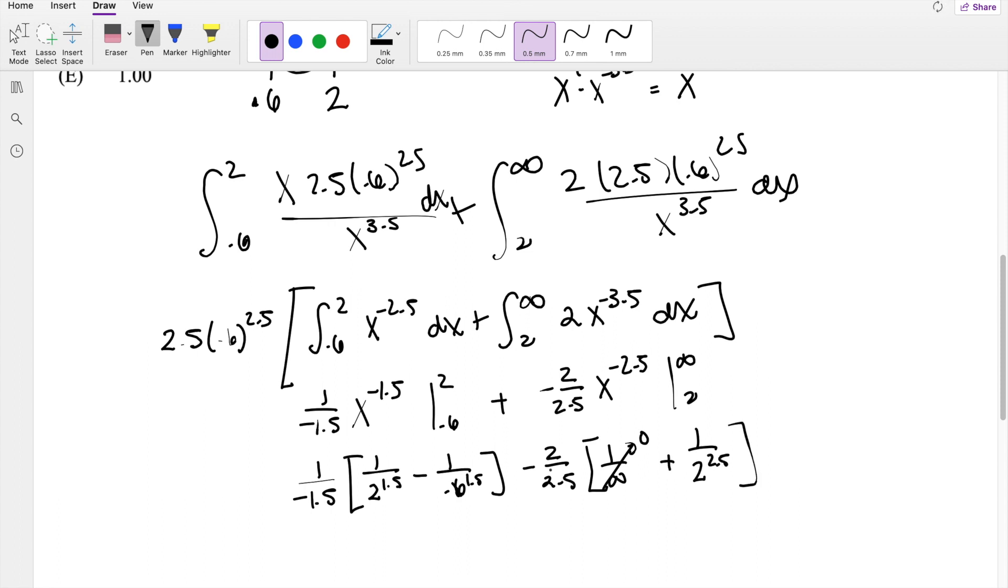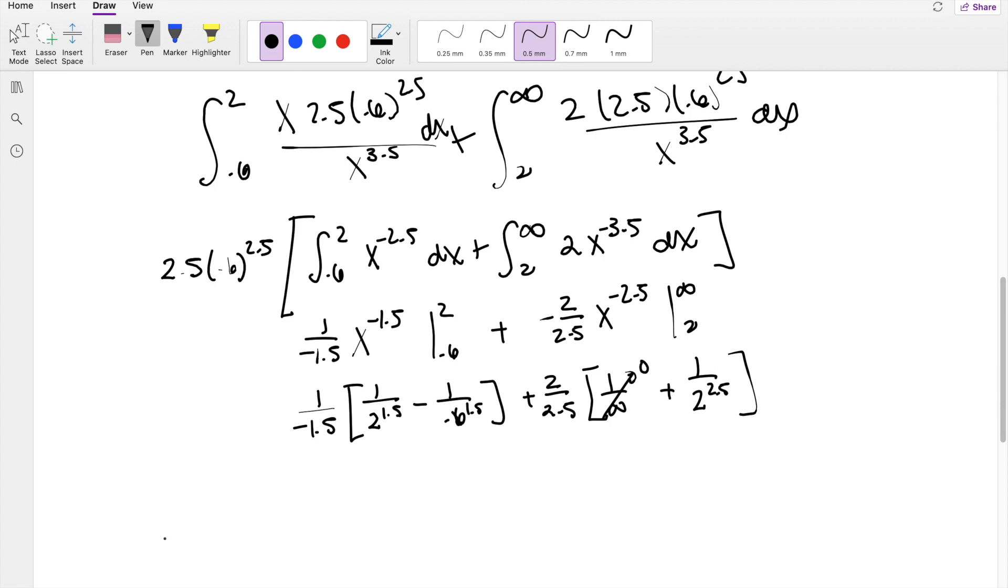The 2 negatives actually make a positive, so this is actually just positive here, and you're left with 2.5 times 0.6 to the 2.5, and 1 over 1.5 is actually just 2 thirds here. So this is, technically we can say this is equal to negative 2 thirds.